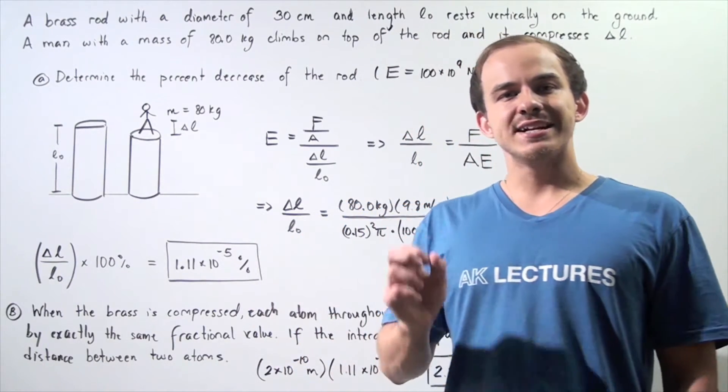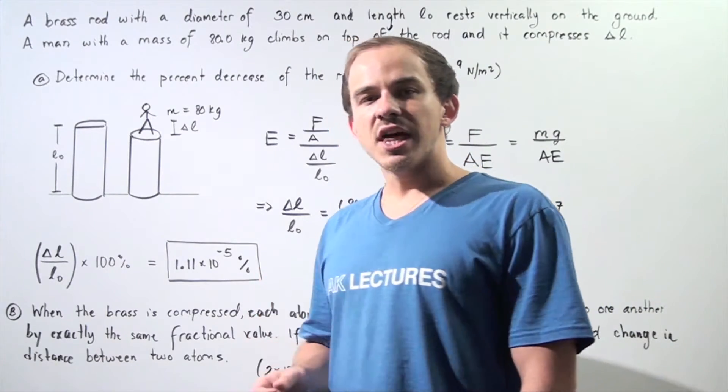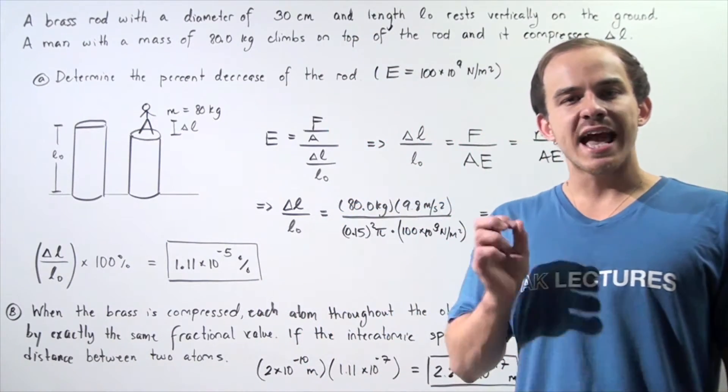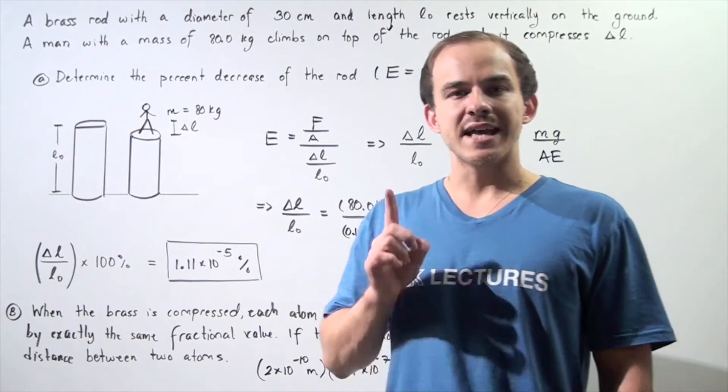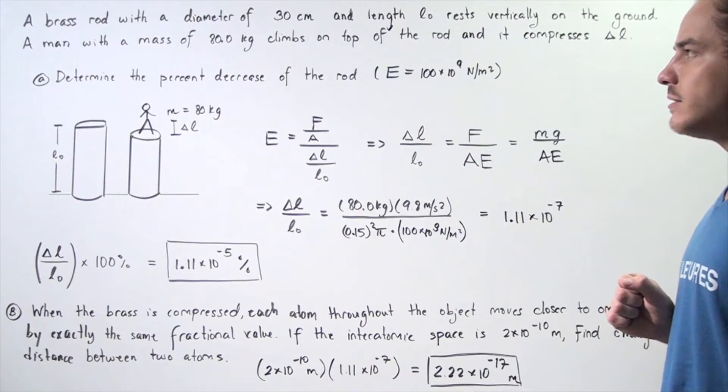Let's look at the following example that essentially deals with compressive stresses. Let's suppose that a brass rod with a diameter of 30 centimeters and a height of L-naught rests vertically upward on the ground.